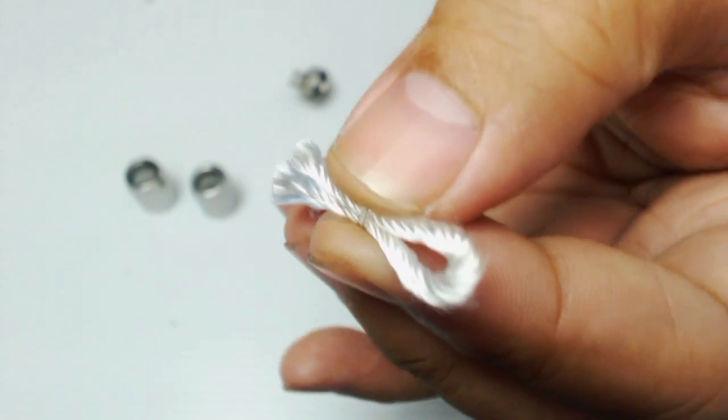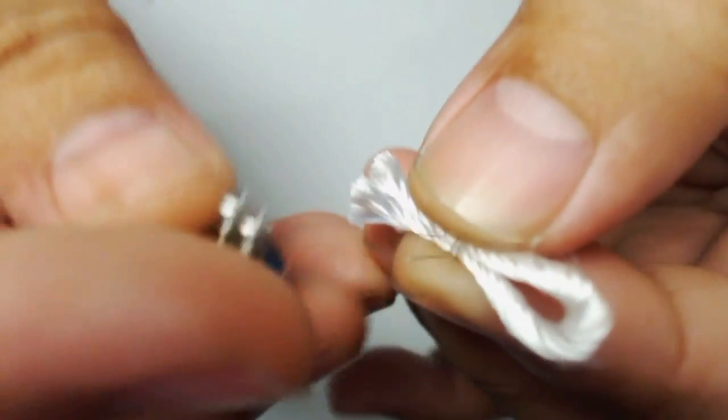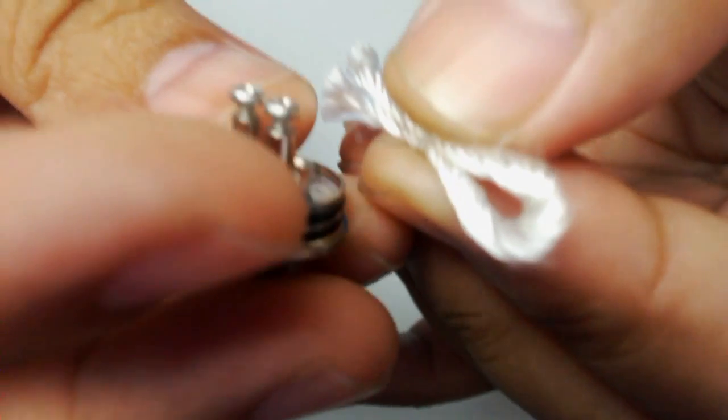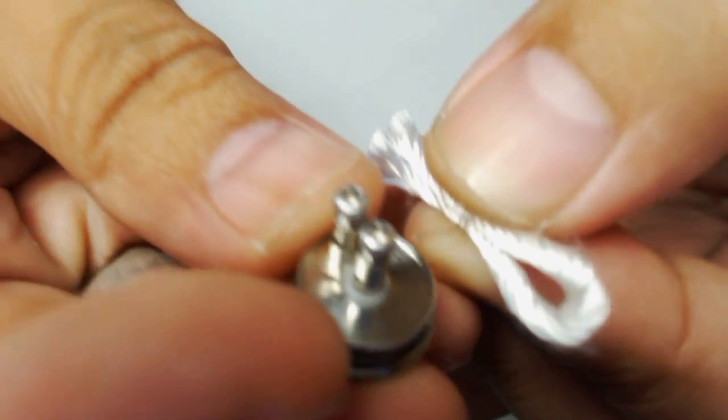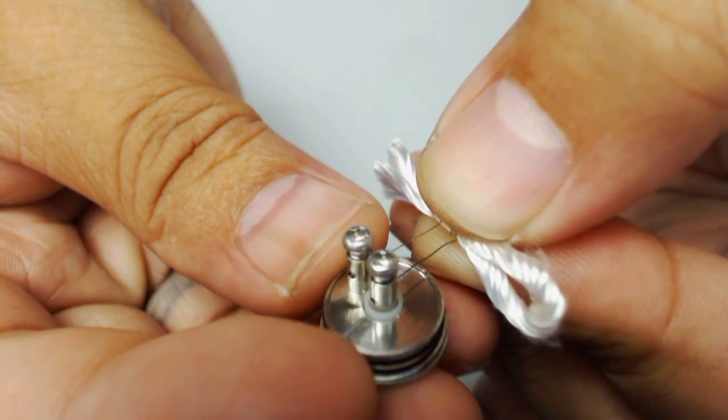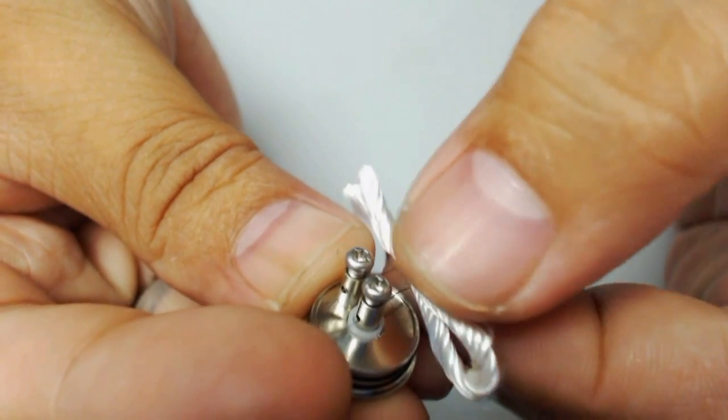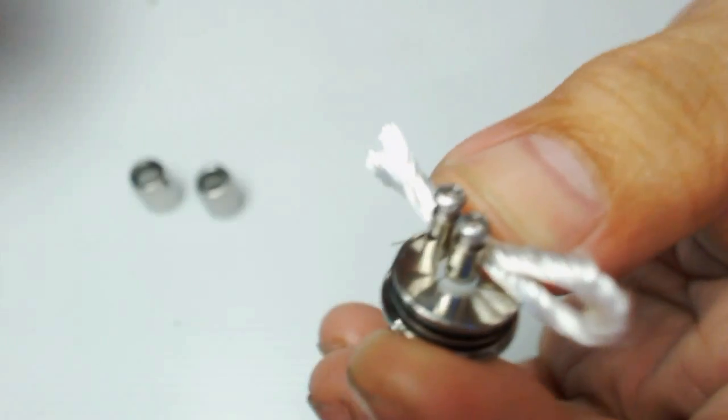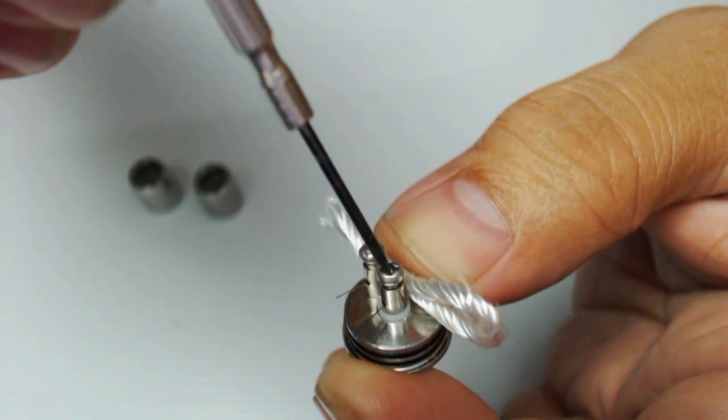After we have made our coil, all we have to do is insert the two kanthal ends into the two holes of the terminal, just like that, and then we tighten the two Phillips screw heads.